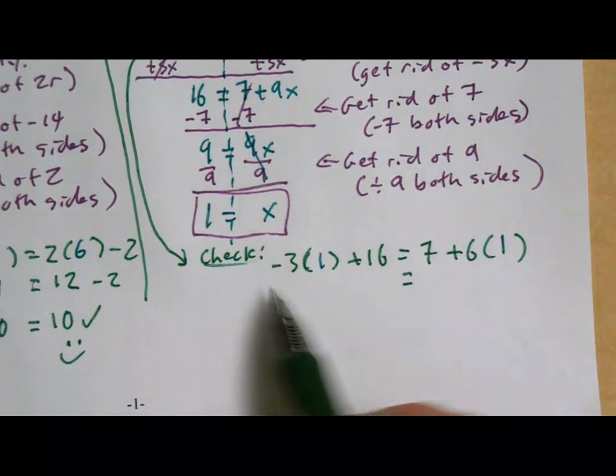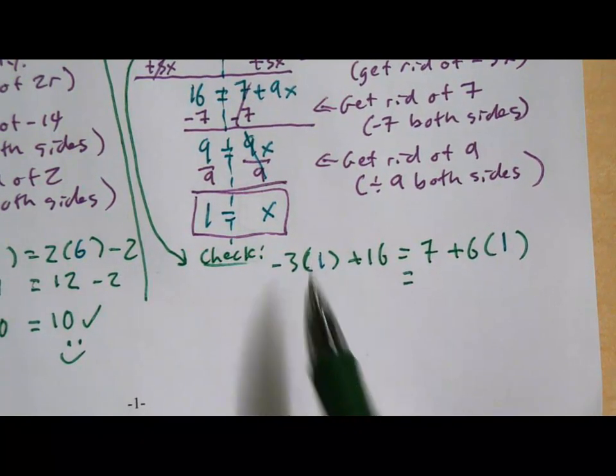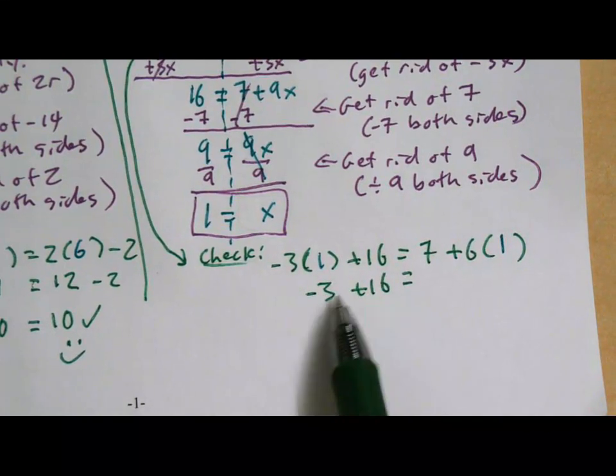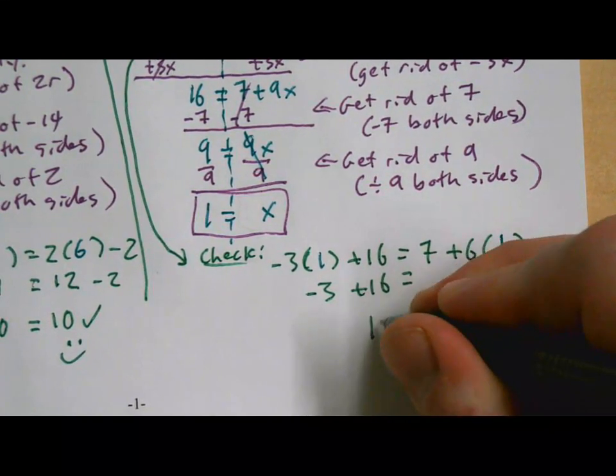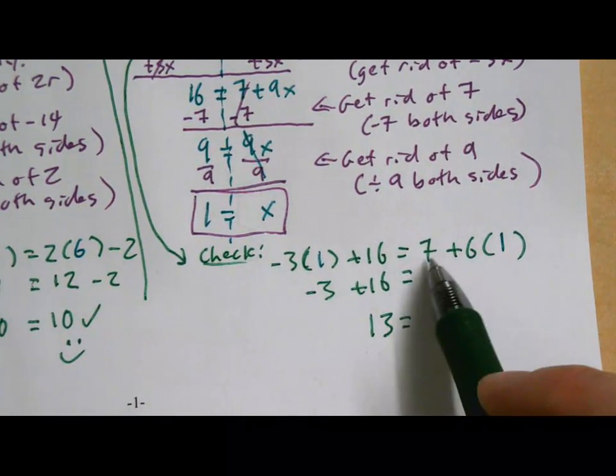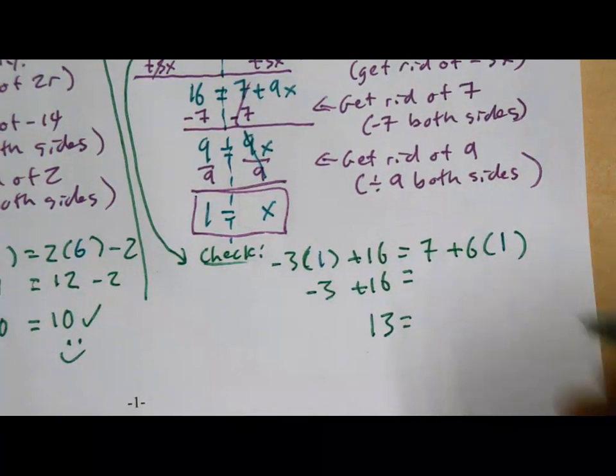So let's focus on the left-hand side here. Multiplication comes before addition. So negative 3 times 1 is negative 3. And then we'll go ahead and take care of the addition. Negative 3 plus 16 is 13. Hopefully we get 13 on the other side too. Alright. On this side, we have addition and multiplication. Multiplication comes first. 6 times 1 is 6. 7 plus 6 is 13. Those two sides match. That means our solution is correct.